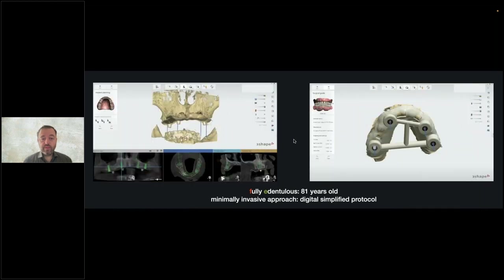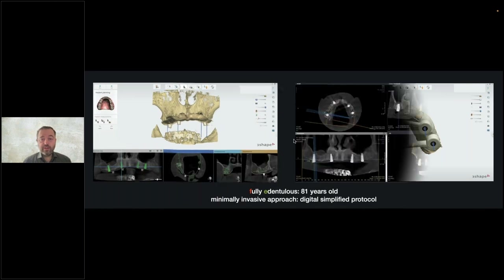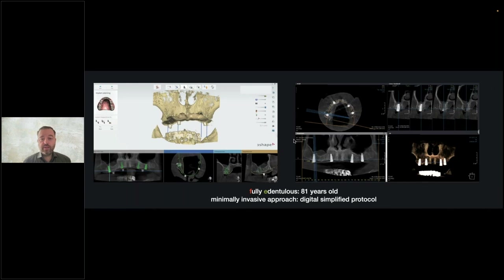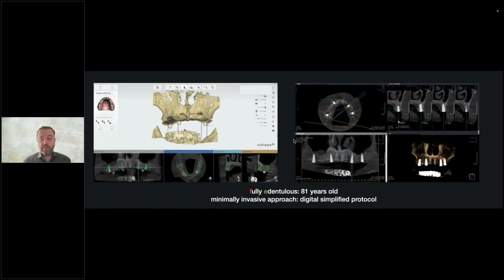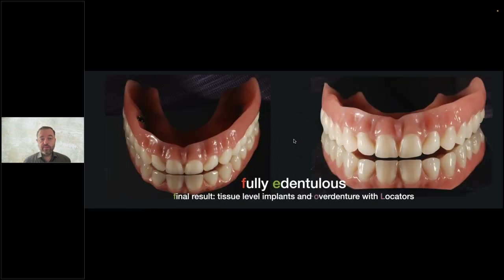We generated the surgical plan using three radiopaque sleeves stuck with cyanoacrylate on the fixed gingiva as reference points to align the oral scan and CBCT scan. Here is the final result: full accuracy. For an 81-year-old patient, when you do it very fast and flapless with no side effects during or after surgery, you can really improve quality of life and oral health. You can see the final result with the overdenture.